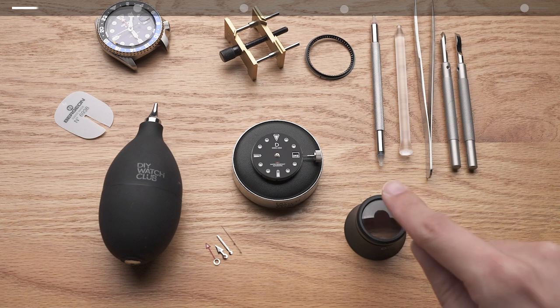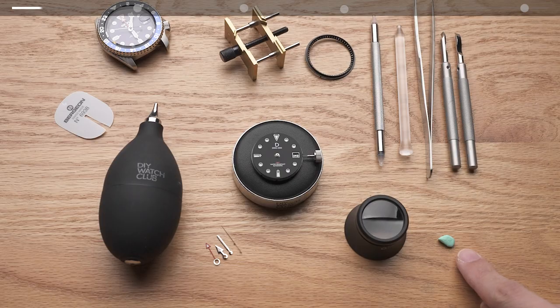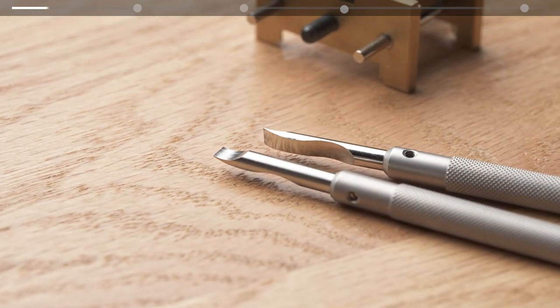For hand installation you'll need a hand installation tool and a pair of tweezers or rodico to pick up the watch hands. A loupe and a set of hand removal tools are also recommended as you'll likely need them as well.